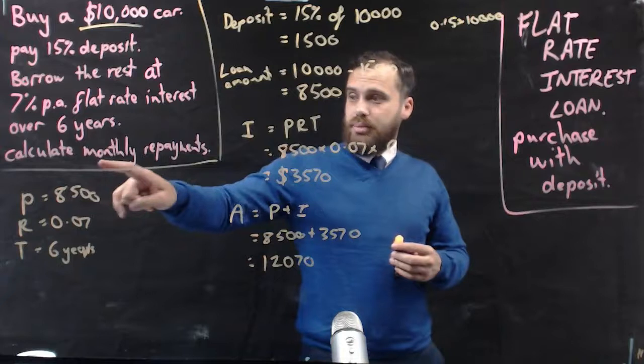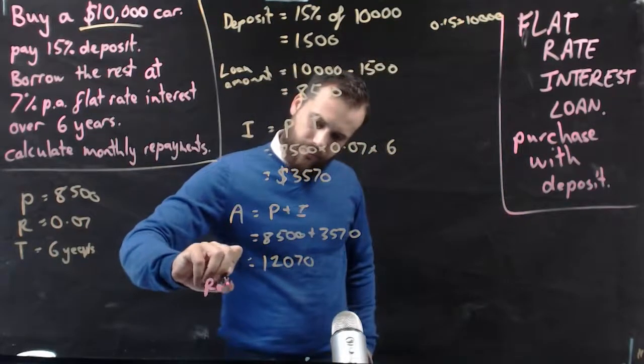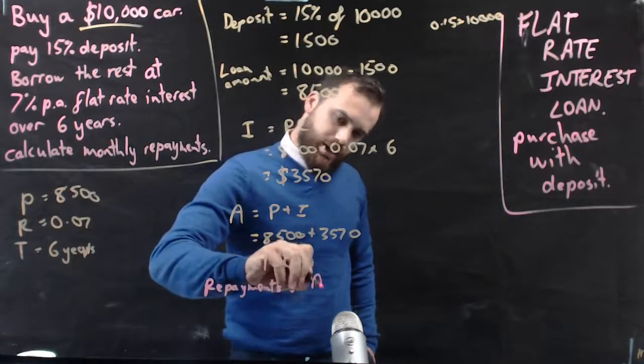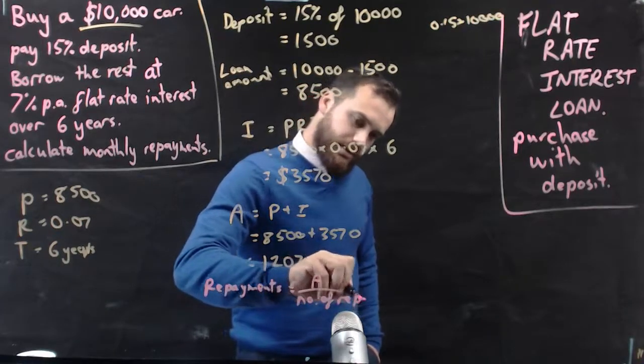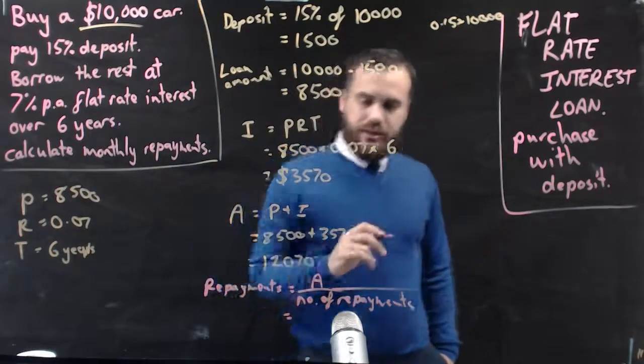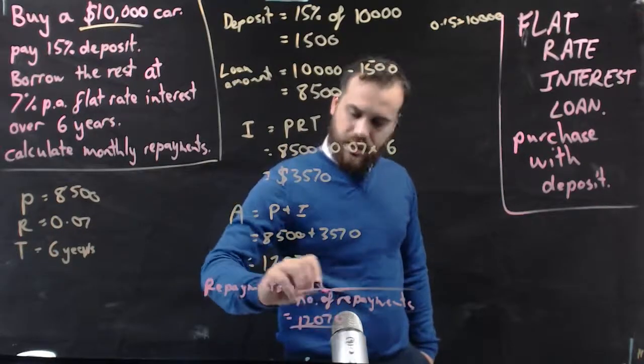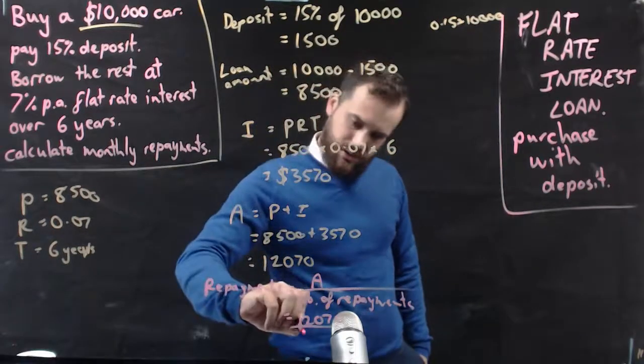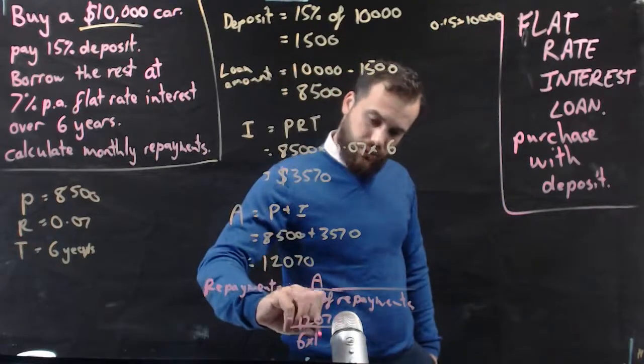But I need to calculate the monthly repayments. Okay, I'm going to switch colors. Repayments are equal to the A over the number of repayments. Now in this case, the A is $12,070. The number of repayments is equal to the number of years, six, times the number of repayments per year, in this case, 12.